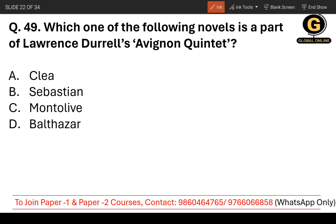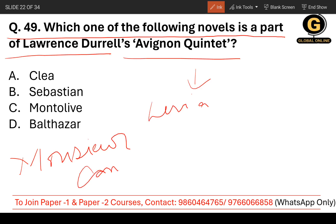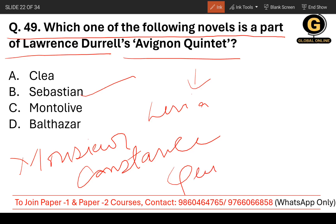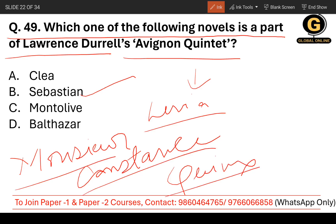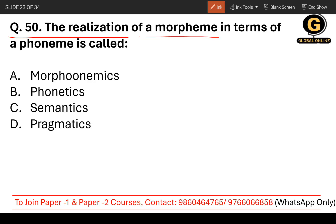Question number 49: Which one of the following novels is part of Lawrence Durrell's Avignon Quintet — a series of five novels? The five novels are Monsieur, Livia, Constance, Sebastian, and Quinx. The correct option is B — Sebastian.